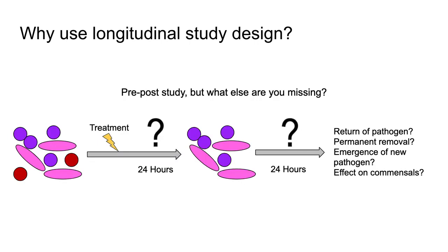Let's take a look at another example which shows the benefit of using a longitudinal study design. We begin with our initial community structure on the left with a pathogen present in red before a treatment takes place. Immediately after sampling the initial community, a treatment occurs and the community is sampled again after 24 hours. This is the simplest form of a longitudinal study, commonly called a pre-post study, because sampling only occurs pre and post treatment.